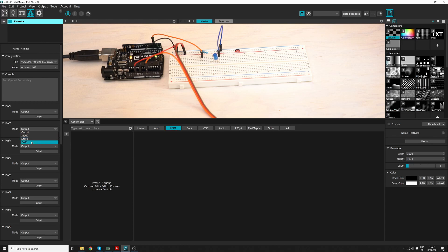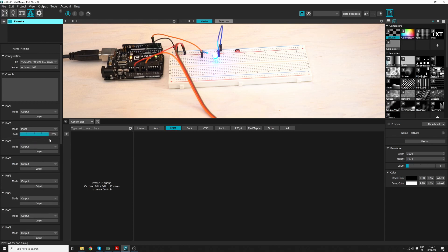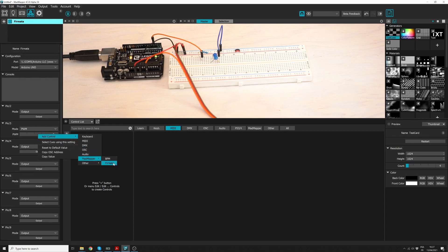In MadMapper, check if the LED is working. Right-click and add control to it. Select MadMapper and then Firmata.